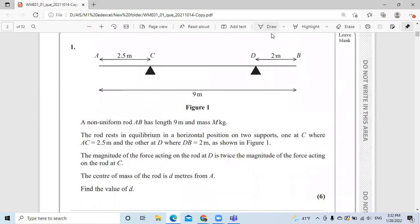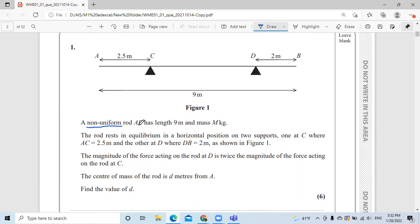Here in this question, they say that we have a plank, as you can see, that means they are talking about moment. A non-uniform wood, that means the center of mass is not exactly in the center of the shape. The rod rests in equilibrium on a horizontal position of two supports.